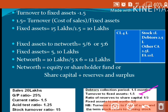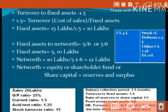Next, the question gives turnover to fixed assets ratio as 1.5:1. Here turnover specifically refers to cost of sales (cost of goods sold). So fixed assets are calculated as: cost of sales (15 lakhs) divided by the fixed asset turnover ratio (1.5) equals 10 lakhs. We have now found fixed assets equal to 10 lakhs.